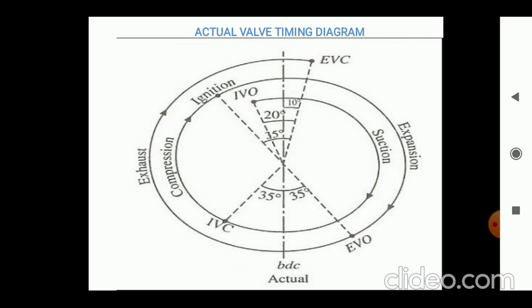At the same time, exhaust valve opens before 35, you can see on the BDC line, bottom dead center, 35 degrees before the exhaust valve is open. And inlet valve is closed after the 35 degrees off, it opens in the compression stroke. These all variations are required for smooth conduction of all four strokes: suction, compression, power, and exhaust. That's why these variations we have to require in actual valve timing diagram.